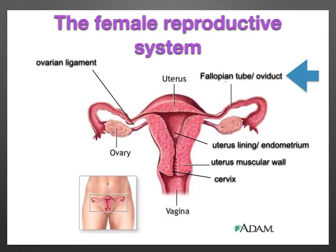The fallopian tubes are also called oviducts. These are two small tubes about 10 centimetres long with a feathery funnel-like opening that partly envelops the ovary, where each of them collects the secondary oocyte released at ovulation. The walls of the fallopian tubes are made of smooth muscle lined by a mucus-secreting layer of ciliated epithelium. These cilia help move the secondary oocyte from the ovary to the uterus.